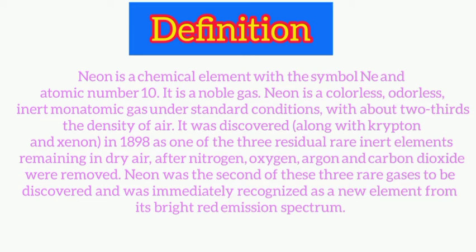It is a noble gas. Neon is a colorless, odorless, inert, monoatomic gas under standard conditions, with about two-thirds the density of air. It was discovered along with krypton and xenon in 1898 as one of the three residual rare inert elements remaining in dry air after nitrogen, oxygen, argon, and carbon dioxide were removed.